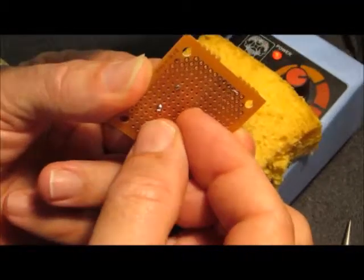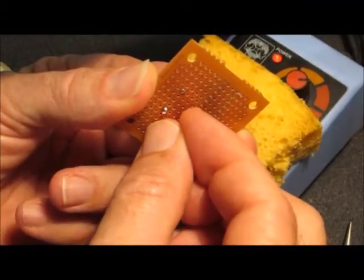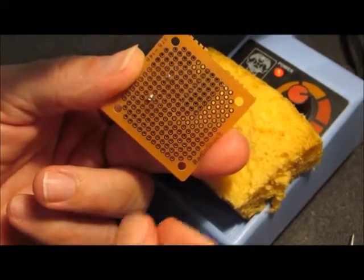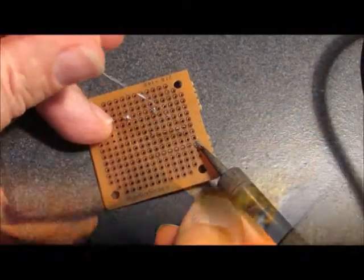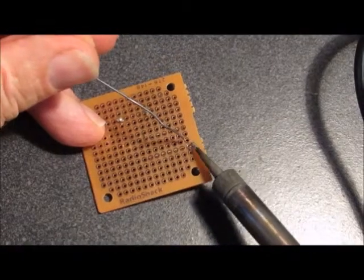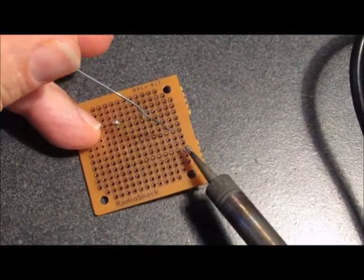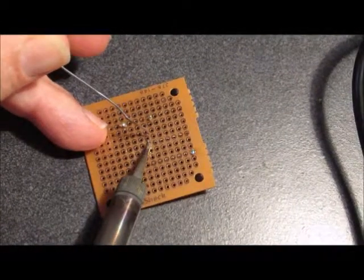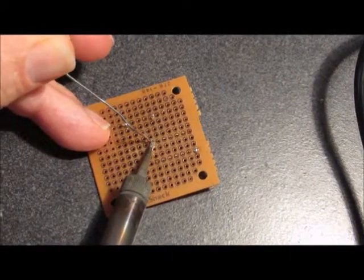I prep the soldering iron tip by wiping it on a damp sponge or rag and then freshen the tinning with a small amount of solder. I will solder the two bent pins first. I hold the tip of the iron against the pin of the IC and the copper pad and allow it to heat up for a second, then I let a small amount of solder flow into the joint.